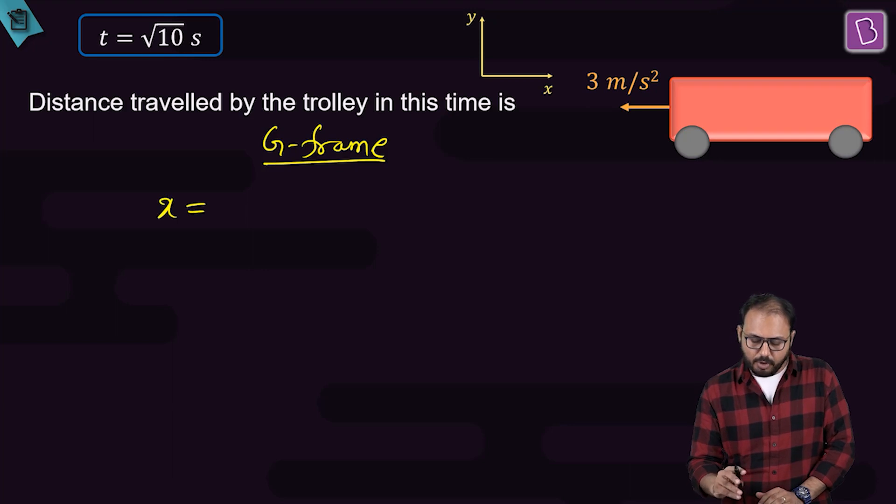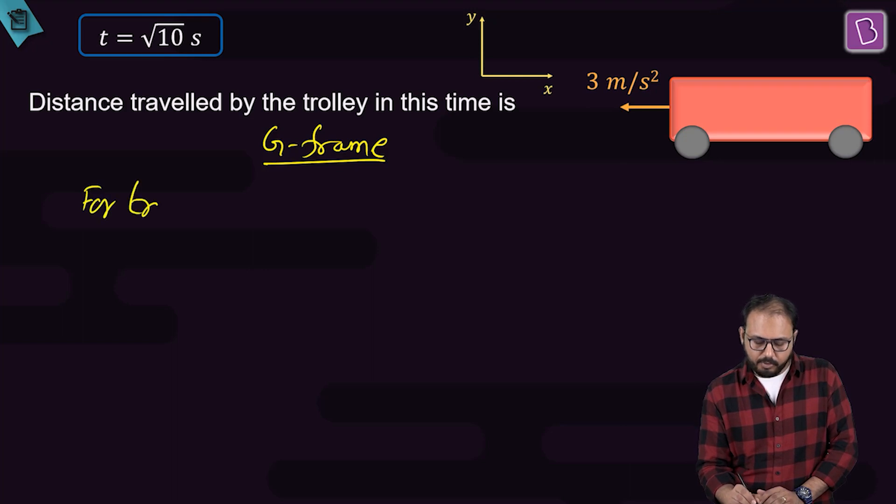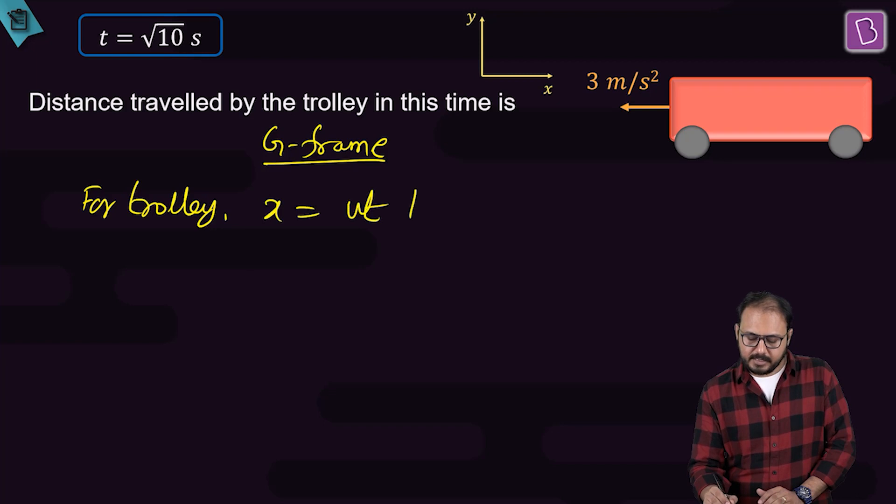This time, x trolley. Equation is x equal to ut plus half at square. For trolley, x is ut plus half at square. Initial is 0. x trolley, let it be xt.